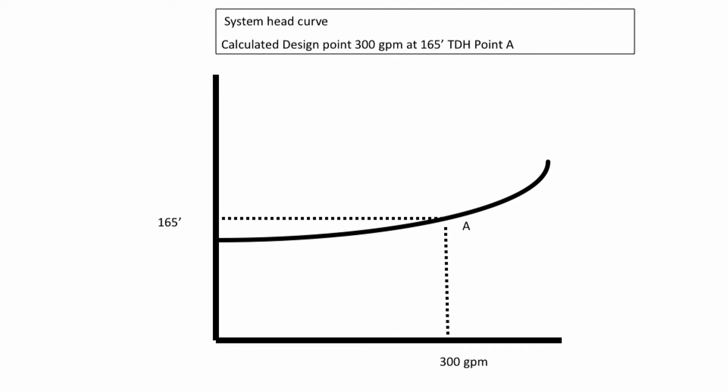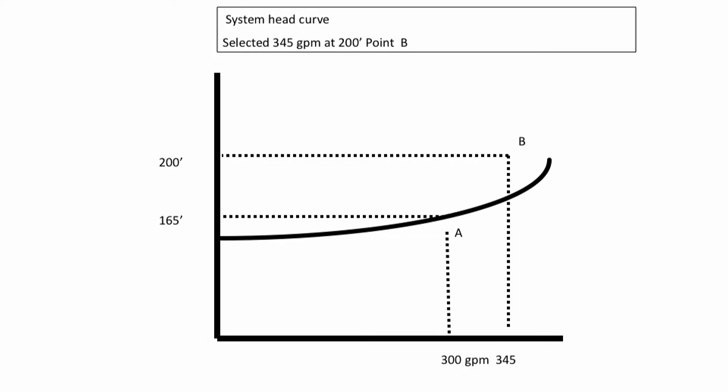The static head and the friction head are plotted. This is what you predict. And your design point is 300 GPM at 165 feet. This is point A. Let's say you add a safety factor of 15% on flow and 20% on head, which means you specify a pump for 345 GPM and 200 feet of head, point B.